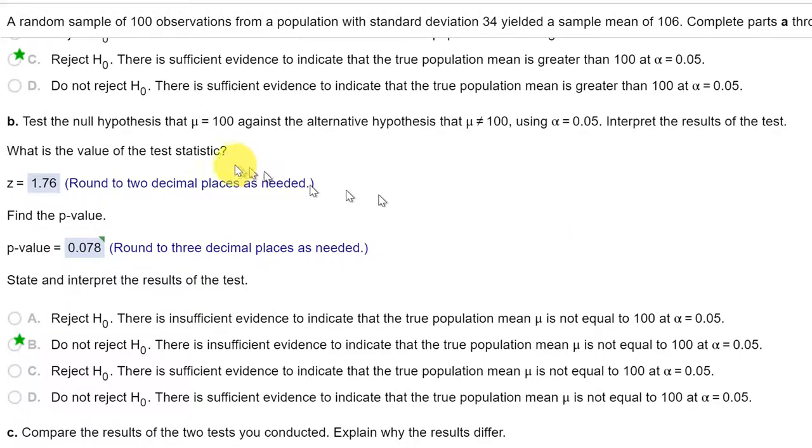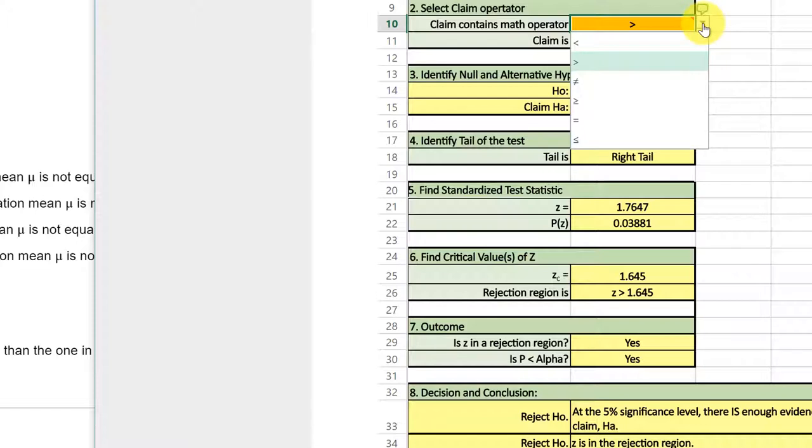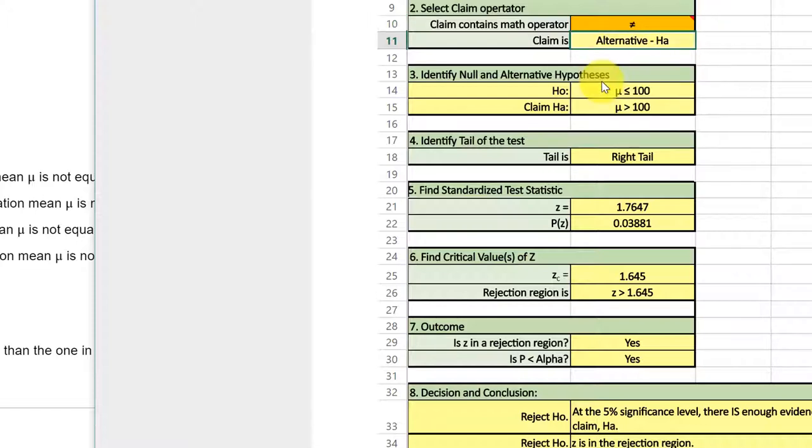Let's look at the next part. It wants us to test the null with the same data that mu is equal to 100 against the alternative hypothesis mu is not equal to 100. So we go back into our calculator, and all we have to do is click in the orange box again. And we want not equal. Our alternative has the not equal operator, and so that changes into a two-tailed test.